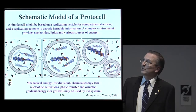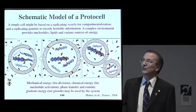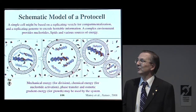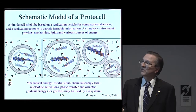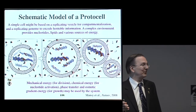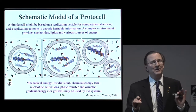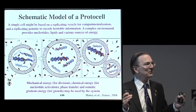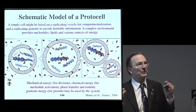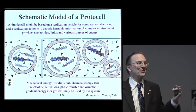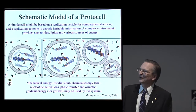The membrane-forming molecules and the building blocks for the genetic material come from the environment, along with various sources of energy — mechanical energy, chemical energy, and so on. The self-assembly of structures like this is actually pretty simple. The tricky part, and the part I want to concentrate on, is how a structure like this could grow and divide without any of the complicated biological machinery that most of us spend our lives studying.